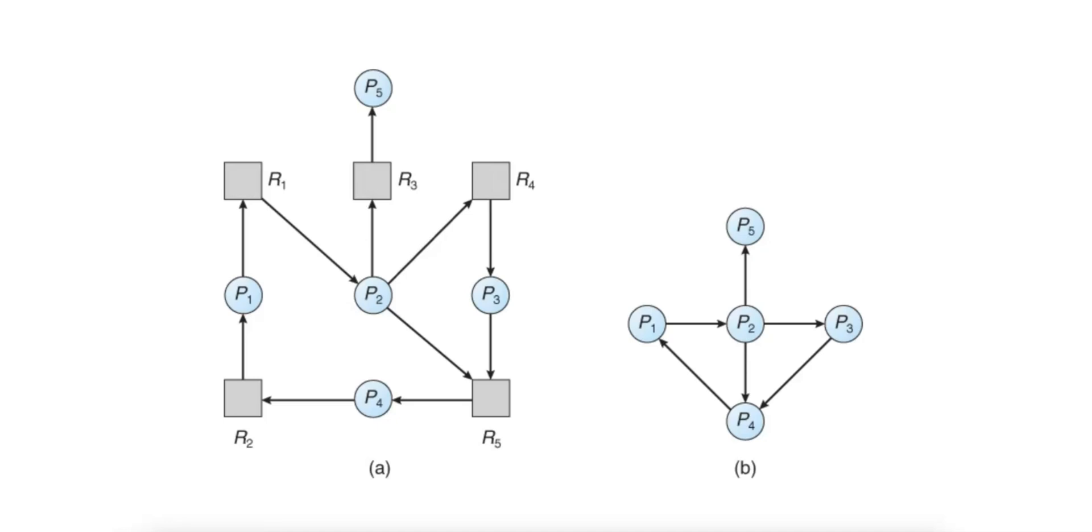The third condition is no preemption. Resources cannot be forcibly taken from a process holding them. The prevention strategy is to allow preemption, where resources can be forcibly taken from processes that request additional resources.